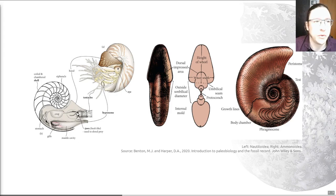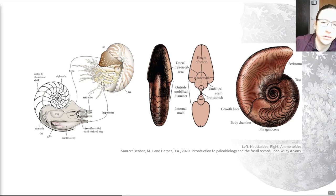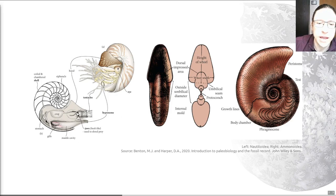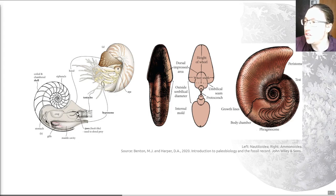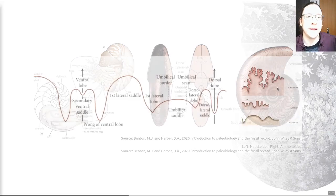In all of the animals with this kind of circular shell form, we'll come across the word whorl — spelled W-H-O-R-L. The whorl is the name for a 360-degree revolution or turn in the spiral growth of a mollusk shell. One 360-degree turn is called one whorl. We'll be coming back to that in the gastropods, because they have a vaguely similar shell shape.